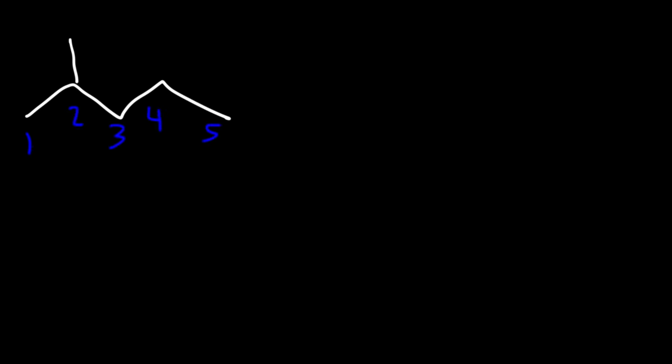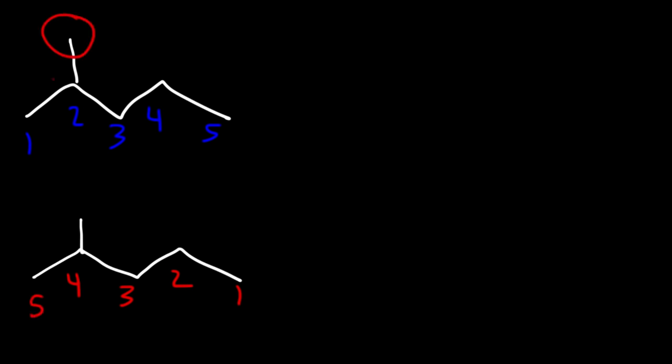Now what about this example? How can we name this particular alkane? The first thing you want to do is count the number of carbon atoms in the parent chain, or the longest chain. Should we count it in this direction or in this direction? The methyl group that we see here is called a substituent, and you want to count in such a way that the substituents have a lower number. Two is lower than four, so this is the correct way to count it.